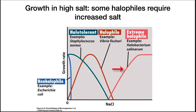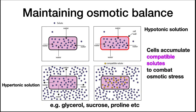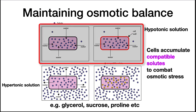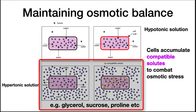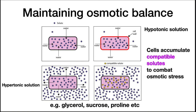A halo-tolerant bacterium such as S. aureus can grow at lower salt concentrations, but still can grow at higher salt concentrations. A halophile such as Vibrio fischeri requires at least some salt to grow well, and an extreme halophile such as Halobacterium salinarum grows even up to saturated salt concentrations. In a typical hypotonic solution, there are more solutes on the inside and water will naturally flow into the cell — this is why most bacteria have a cell wall. However, in a hypertonic solution, more solutes are on the outside of the cell, and water will want to flow out. Non-halophiles will not be able to compensate for this, and their cytoplasm will dehydrate, making it impossible for them to grow. Cells that can survive high salt concentrations will accumulate compatible solutes, so named because they are compatible with cellular metabolism. Compatible solutes balance the osmotic stress and prevent the outflow of water.